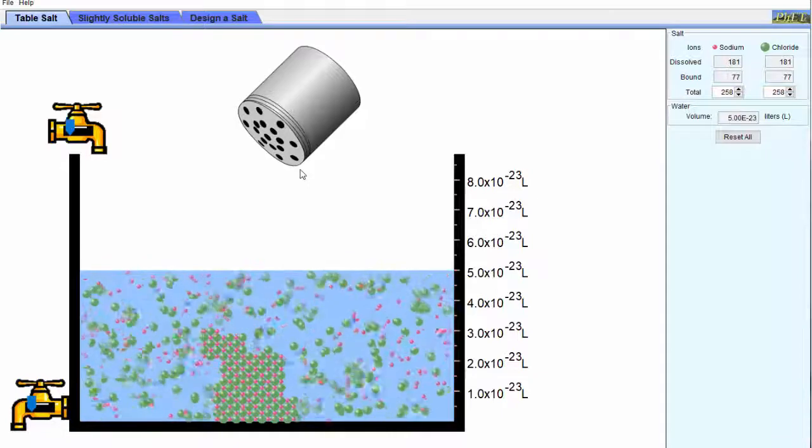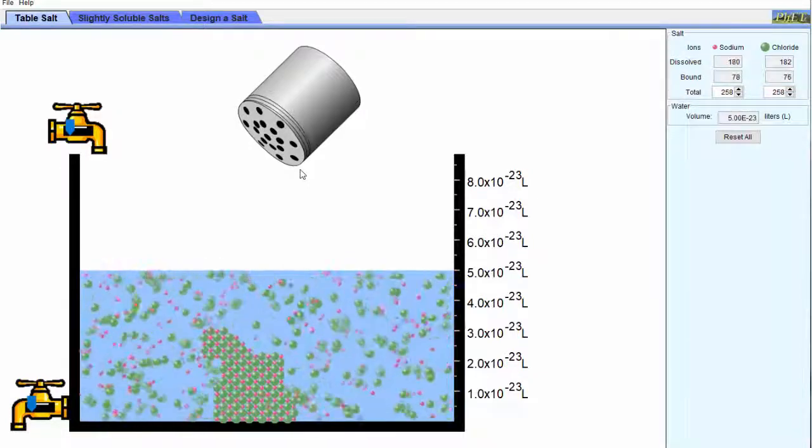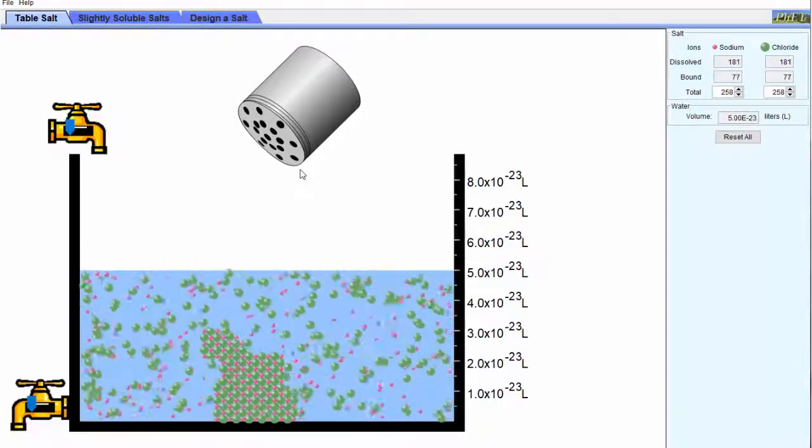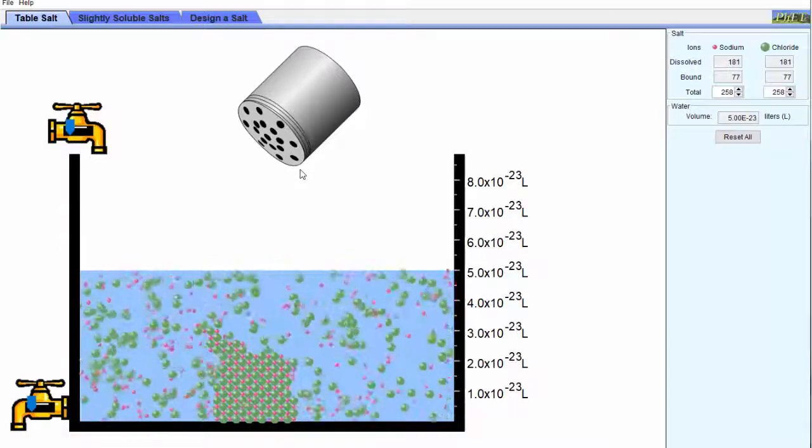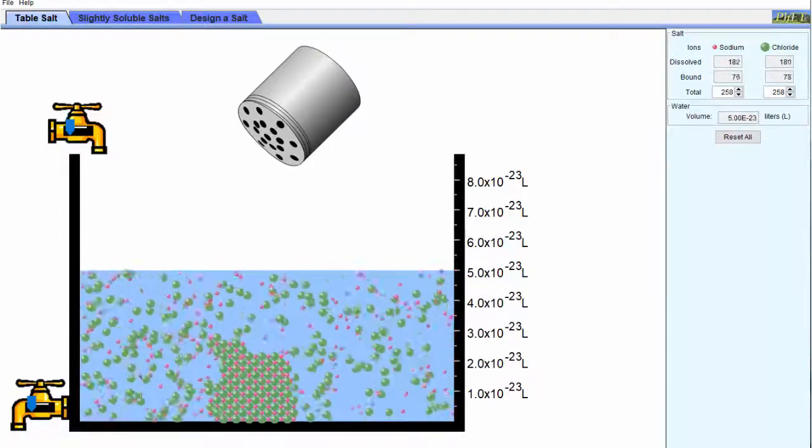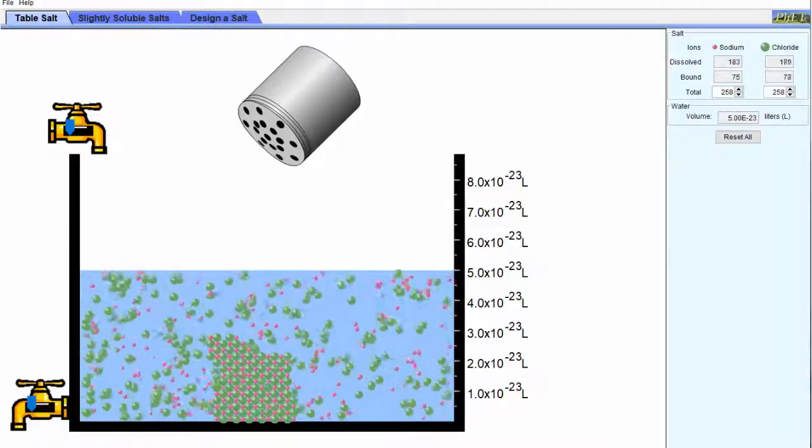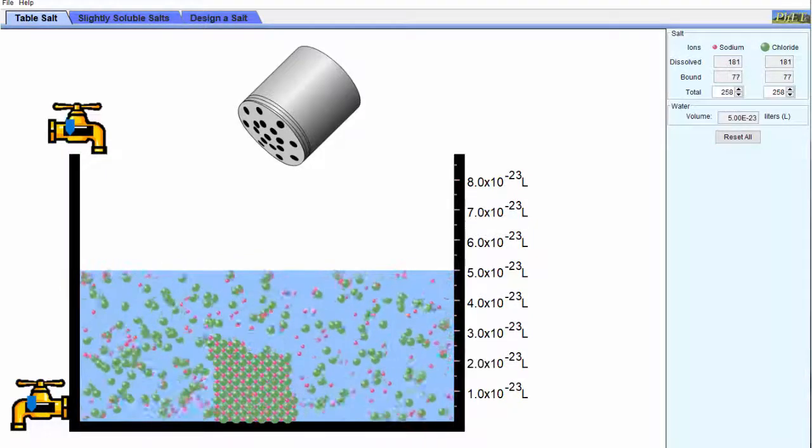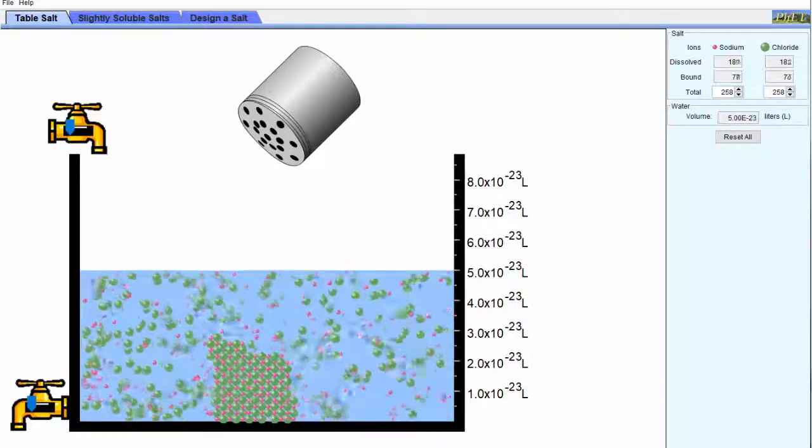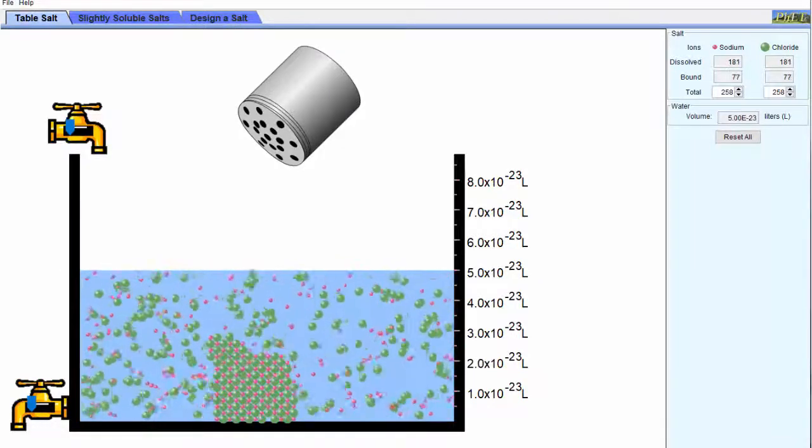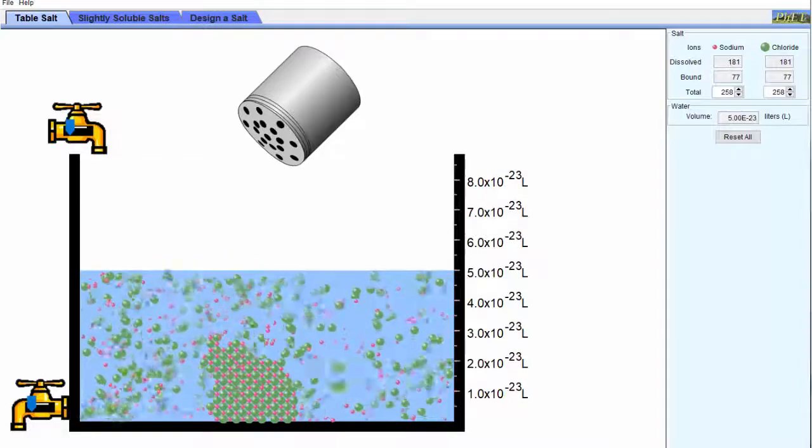However, watch the saturated solution closely. You'll see that in fact ions are dissolving from the crystals, but at the same time other ions are precipitating out from solution onto the surface of the crystal. So the crystal is both dissolving and precipitating. And right now, the rate at which they're precipitating equals the rate at which they're dissolving.